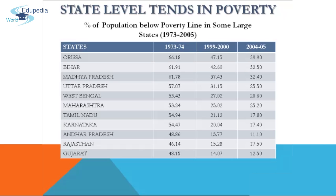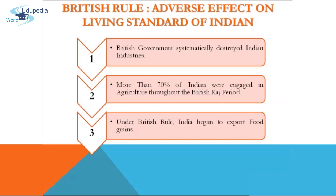British rule had a substantial negative impact on the Indian economy and standard of living. The British government systematically destroyed Indian industries. Their primary motive behind de-industrialization was twofold: first, to get raw materials like cotton and jute from India at cheap rates for modern industries in Britain; and second, to sell finished products like cotton cloth to the Indian market at higher prices.